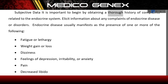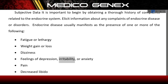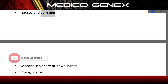It is important to begin by obtaining a thorough history of complaints related to the endocrine system and to elicit information about any endocrine disease or disorders. Endocrine disease usually manifests as one or more of the following: fatigue or lethargy, weight gain or loss, dizziness, feelings of depression, irritability or anxiety, pain, or decreased libido.